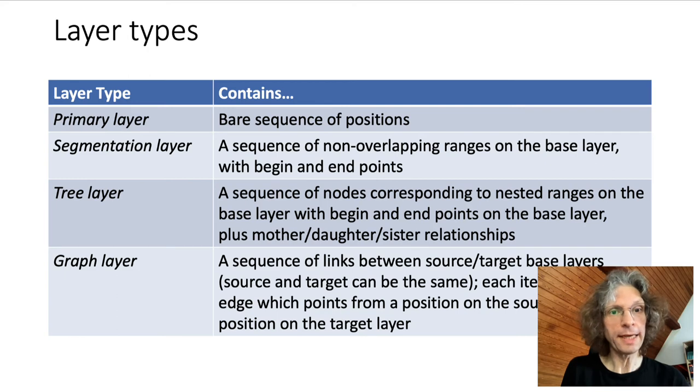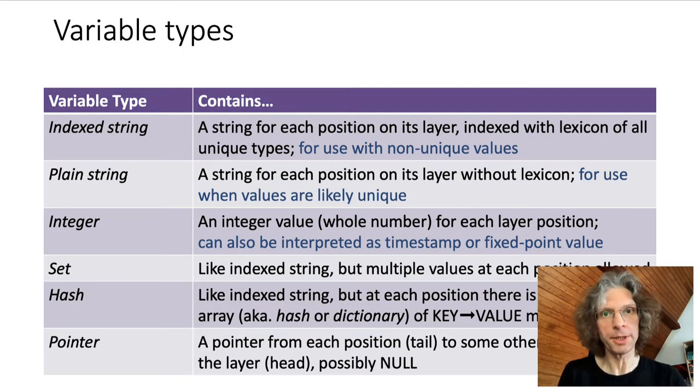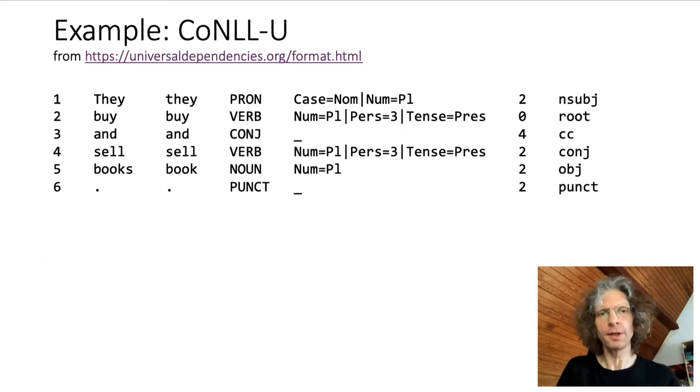Here's a list of the different layer types and variable types, in case you want to ask us about them in the Q&A. It's perhaps most intuitive to show a few examples of modeling different types of corpora in Ziggurat.